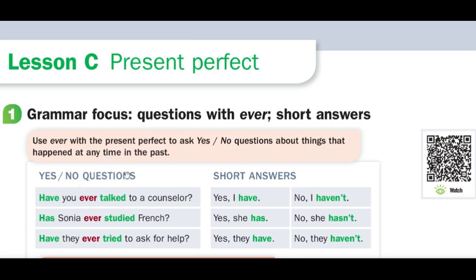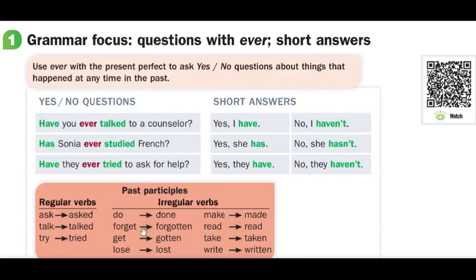Yes/no questions with short answers. Have you ever talked to a counselor? Yes, I have. No, I haven't. Has Sonia ever studied French? Yes, she has. No, she hasn't. Have they ever tried to ask for help? Yes, they have. No, they haven't.